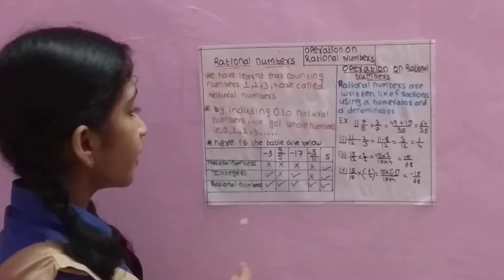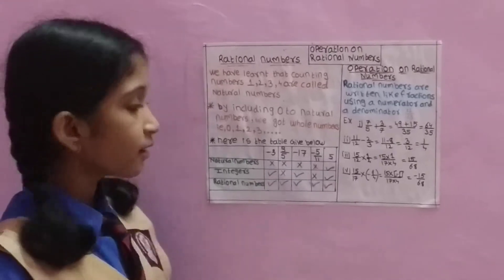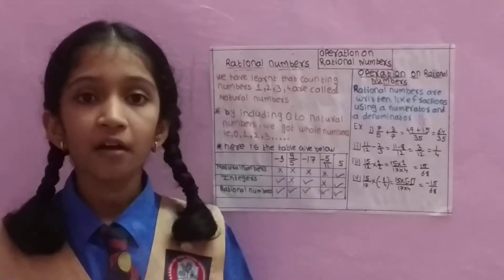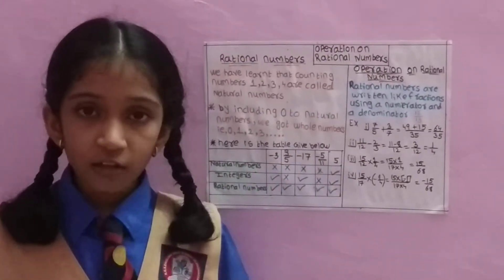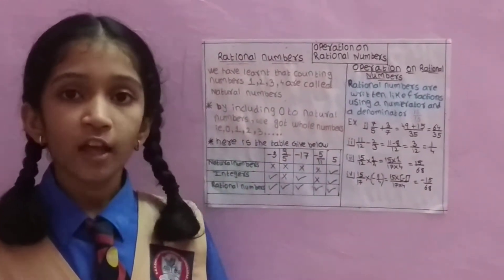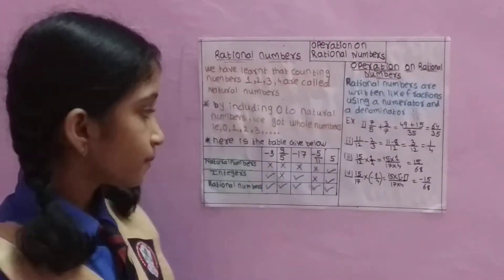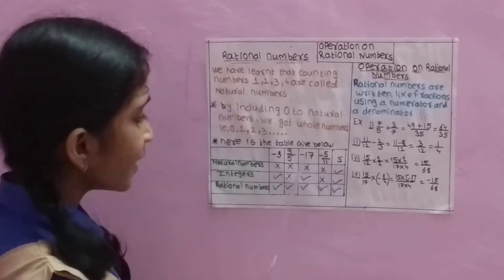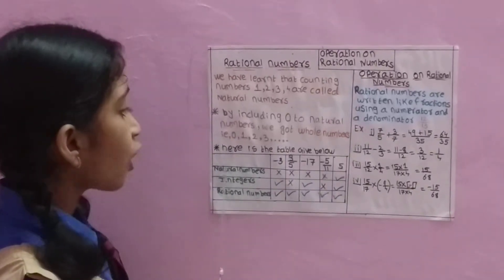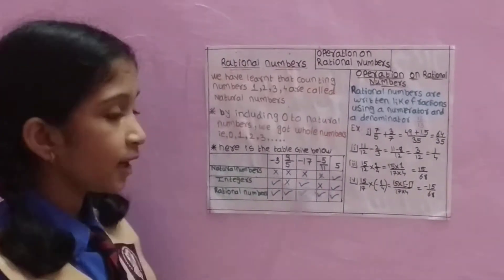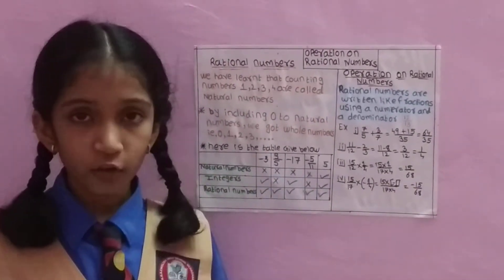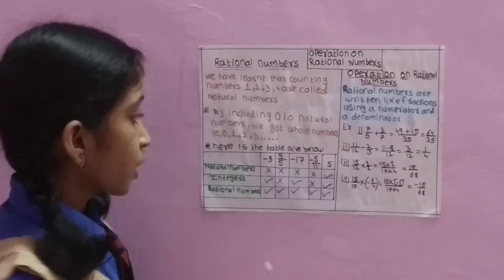There is a chart given here to classify natural numbers, integers, and rational numbers. Minus 3 is not a natural number — it is an integer and a rational number.